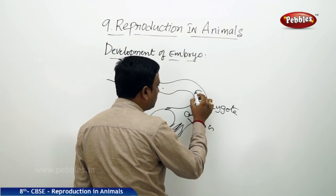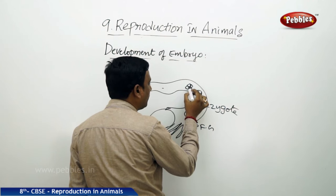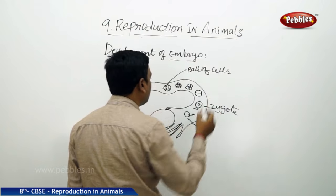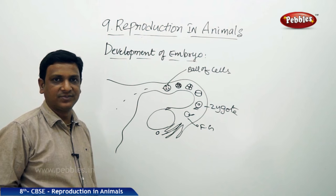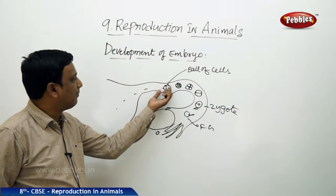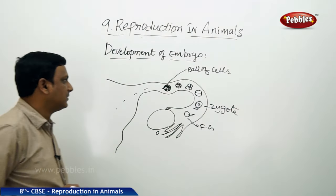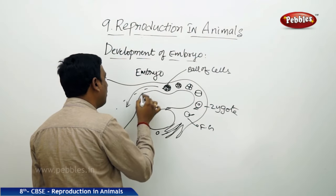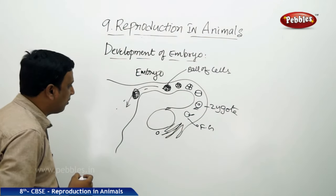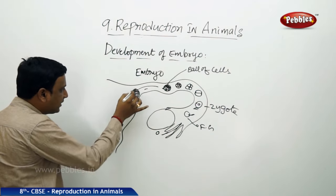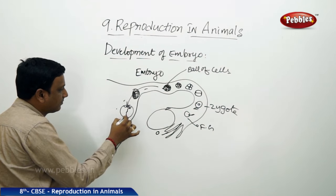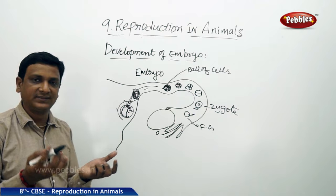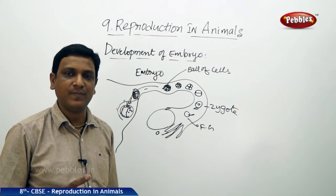The zygote develops: one cell becomes two, two become four, four become eight — gradual cell divisions take place and it becomes a ball of cells called the embryo. This embryo gets implanted in the wall of the uterus. The wall of the uterus is like a cushion supplied with blood vessels that supply oxygen, food material, and everything to the embryo.